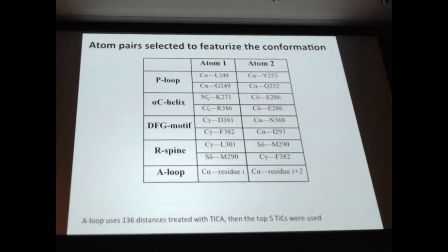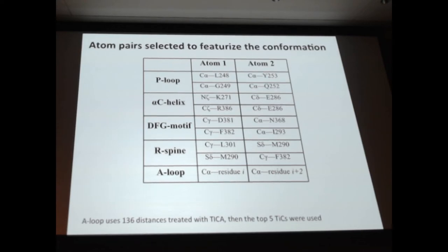We focus on a feature subspace that is really focused on the structural elements we know are important based on what everybody has been seeing with these kinases. This is not an objective feature space - we're not agnostic about the kinase, and we probably miss some important conformational determinants somewhere in the structure because some of them may not yet be discovered. But without focusing the model on this, it was very hard to actually get models that were converging and making sense. The A-loop is a bit of a mess because it's very large and flexible, so we used about 136 distances and then did tICA on the A-loop and used the first five tICA components. Taking everything together, we have about 13 dimensional space.